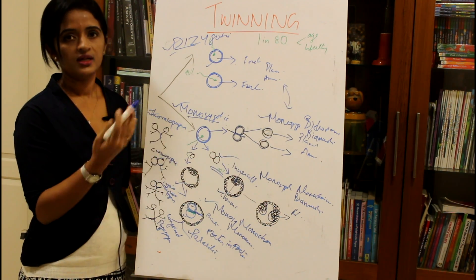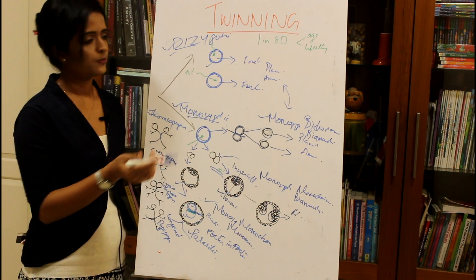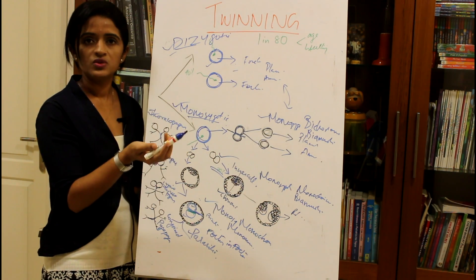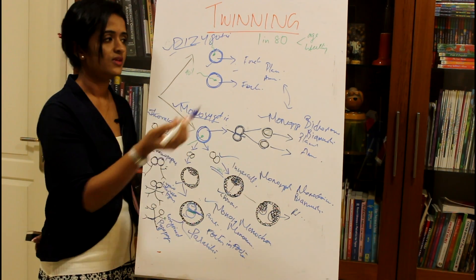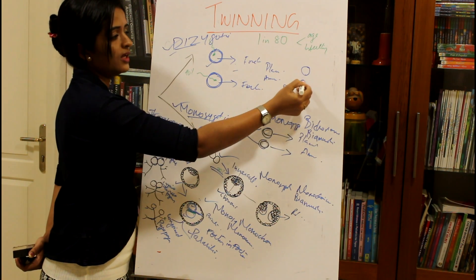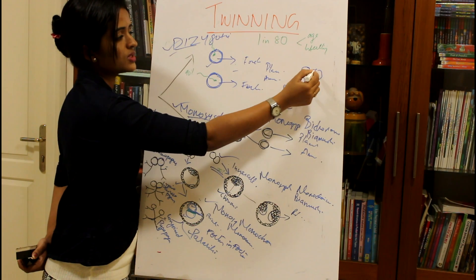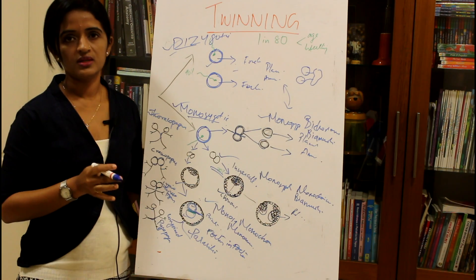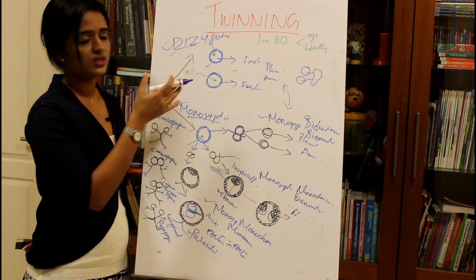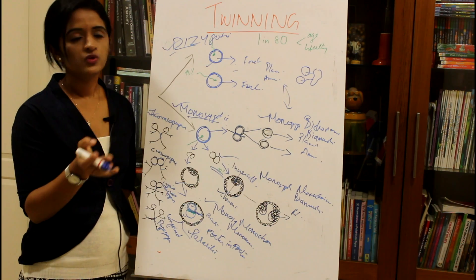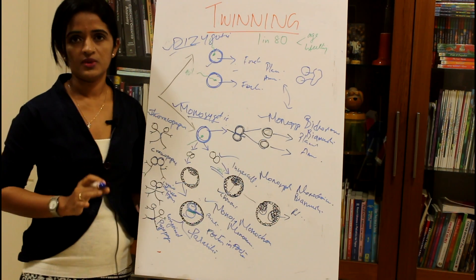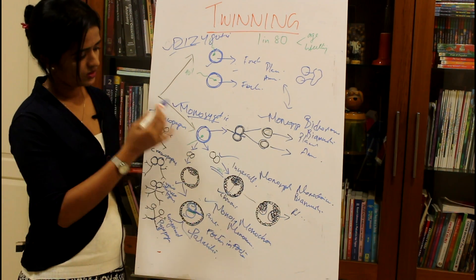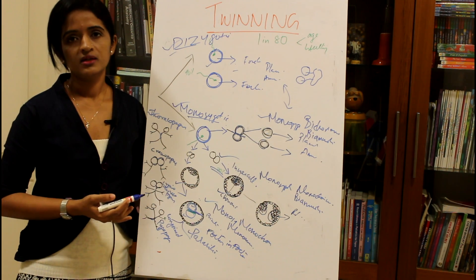In dizygotic twins, although each has a separate placenta, the placentas may implant close together and get fused — this is called a fused placenta. However, a fused placenta does not mean they share a common placenta; they still have different chorionic and amniotic cavities.